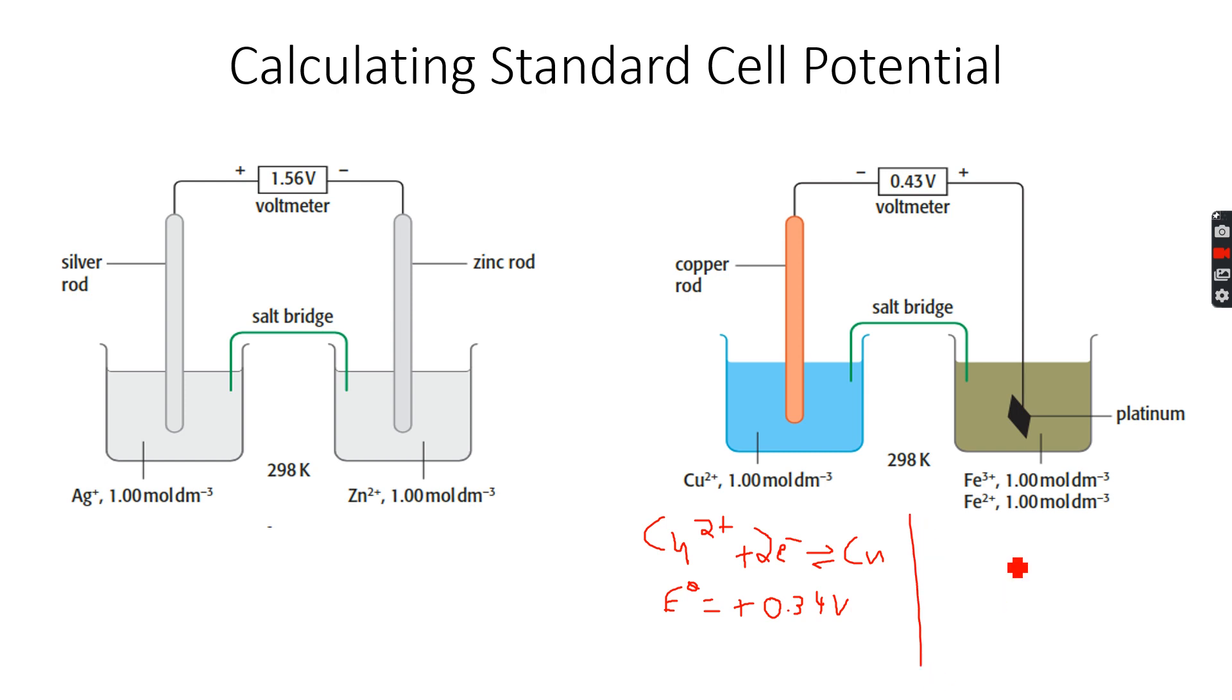Then on this side we have Fe³⁺ plus e⁻ giving us Fe²⁺, with an E° of plus 0.77 volts. You'll find these E° values in the data booklet. Now that we have done this, you can see that plus 0.34 is less than plus 0.77.